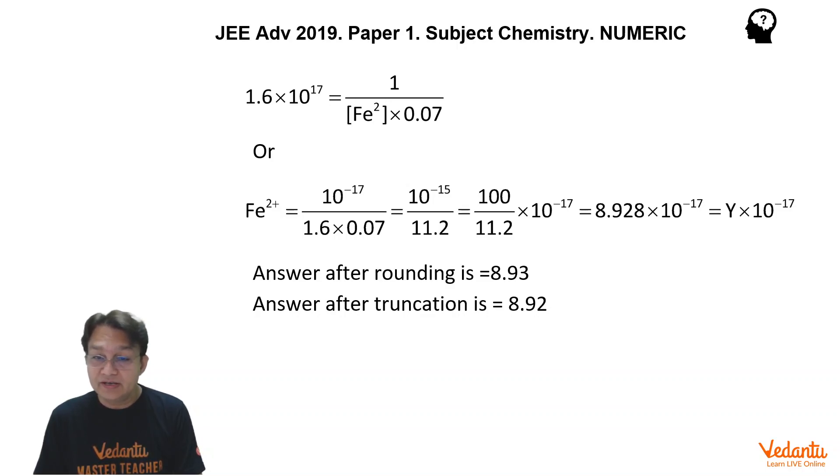So if you solve it fully and you truncate it, it is not rounding it off, if you truncate your answer to the two digits, two decimal digits, then your answer is going to be 8.92. So Y is equals to 8.92.